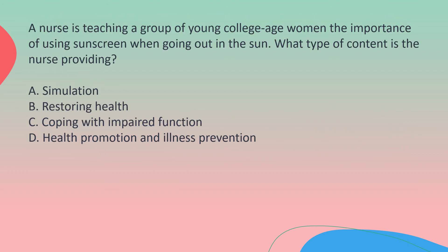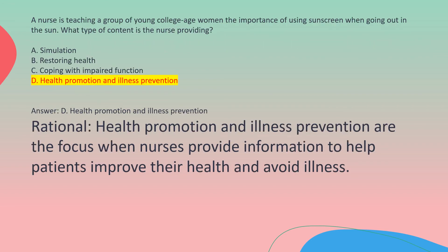A nurse is teaching a group of young college-age women the importance of using sunscreen when going out in the sun. What type of content is the nurse providing? A. Simulation. B. Restoring Health. C. Coping with impaired function. D. Health Promotion and Illness Prevention. Answer: D. Health Promotion and Illness Prevention. Rationale: Health Promotion and Illness Prevention are the focus when nurses provide information to help patients improve their health and avoid illness.